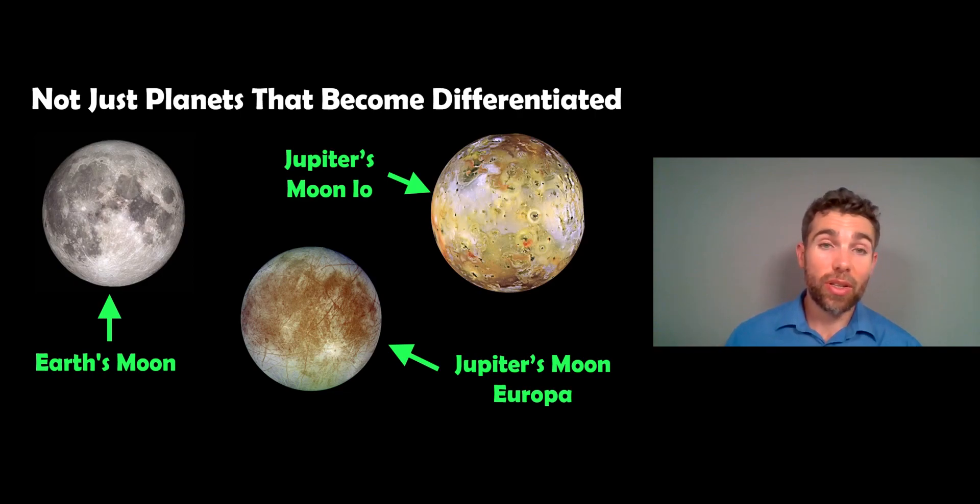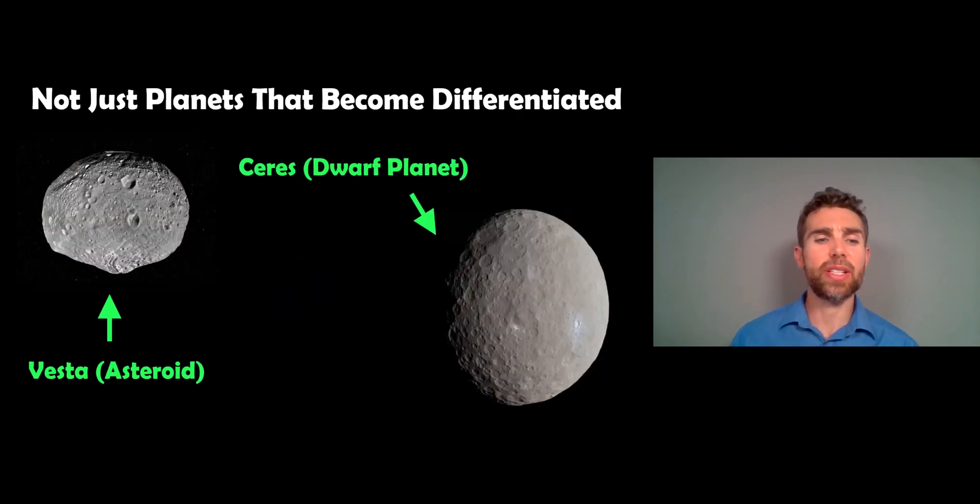And Saturn's moons are going to be differentiated as well. But you can also get things like dwarf planets. So Ceres and Vesta, these are dwarf planets, asteroids, minor planets. These can become differentiated as well.